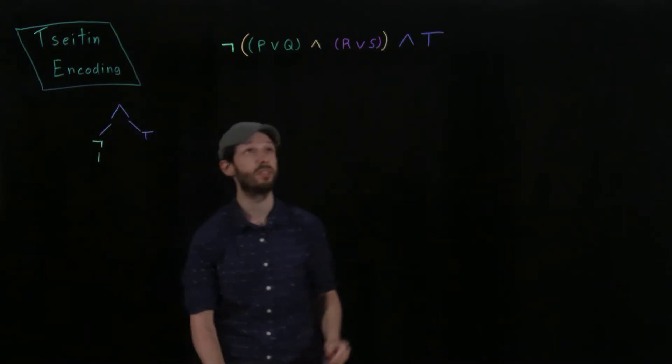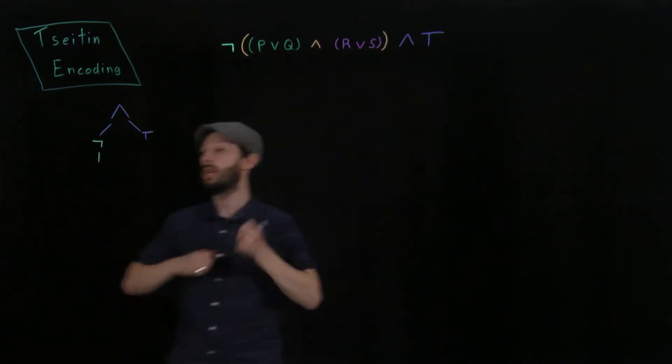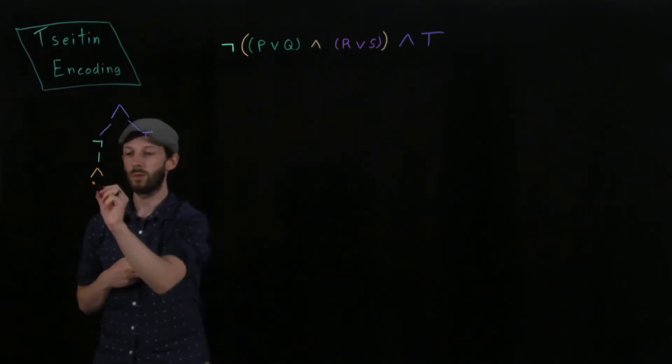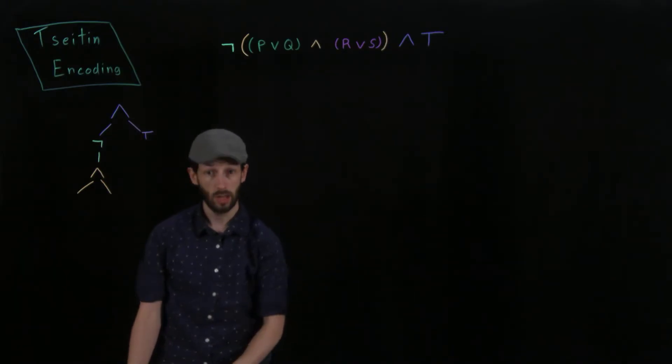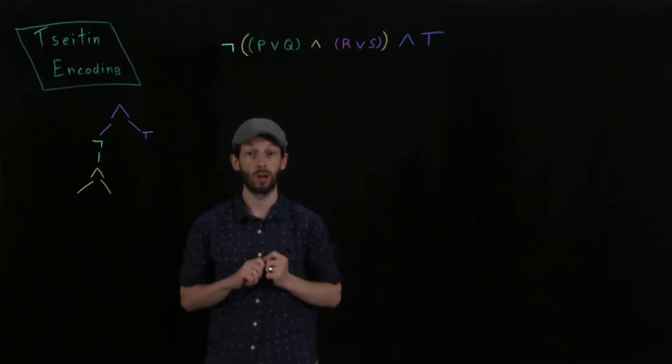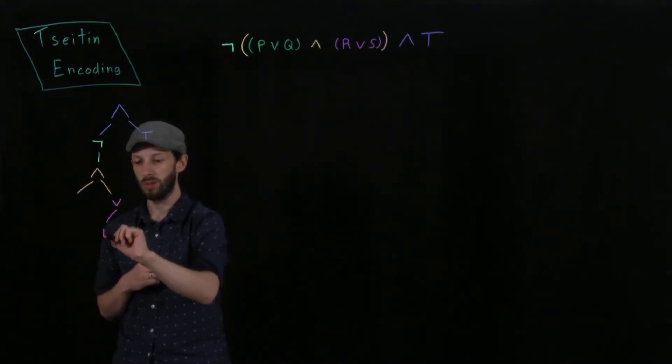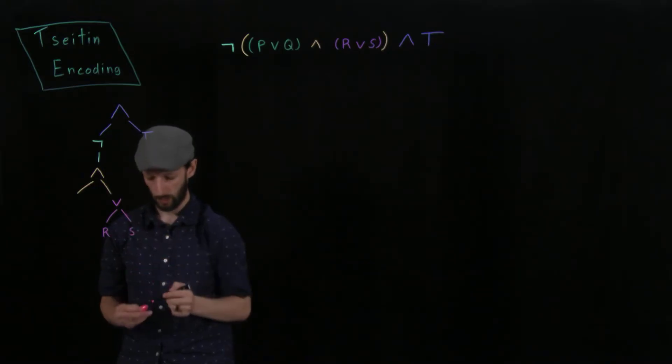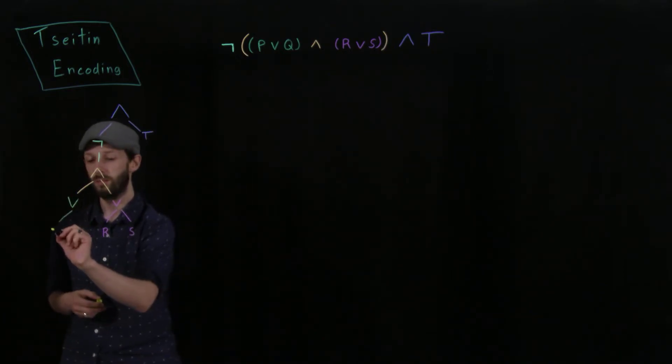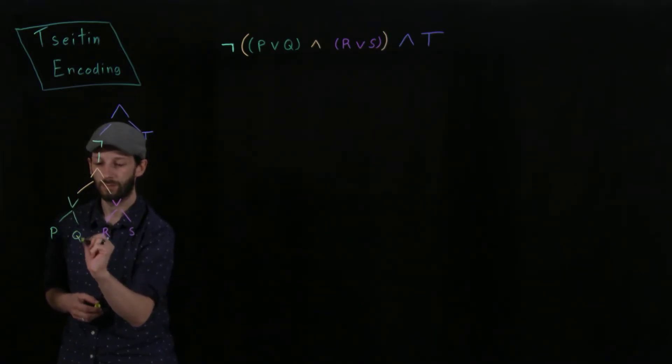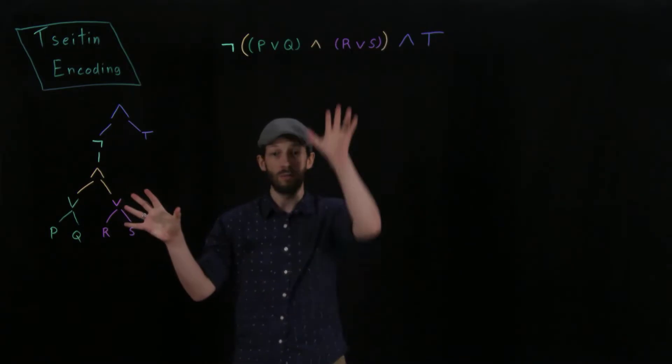Now inside of there we have a conjunction between two different subformulas. And so we have a conjunction in our parse tree between two different subformulas. And each part of the subformula I'm representing again with the same colors as you see above as in the parse tree. On one side we have R or S and so this is an OR between the propositions R and S. And on the other side we again have a disjunction, an OR between the propositions P and Q. Okay, so this is the parse tree. We've already seen how to create parse trees from formulas. This is the parse tree for this particular formula.